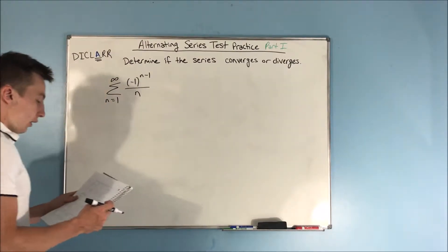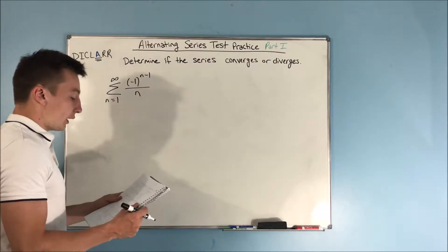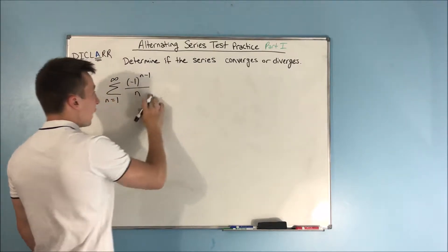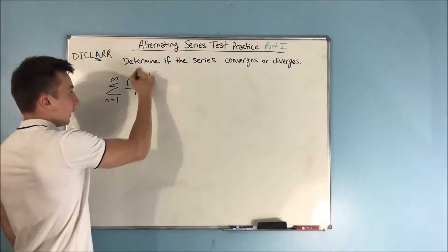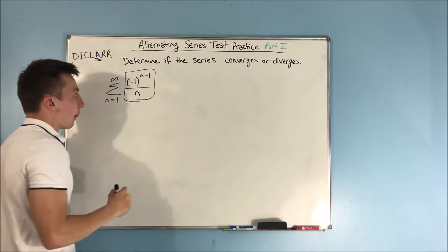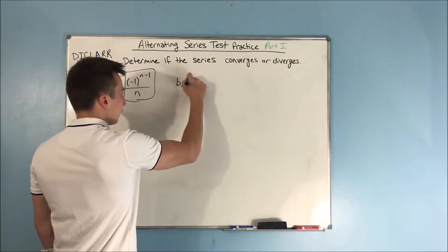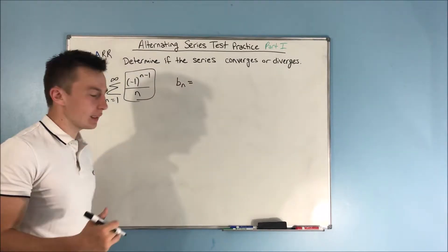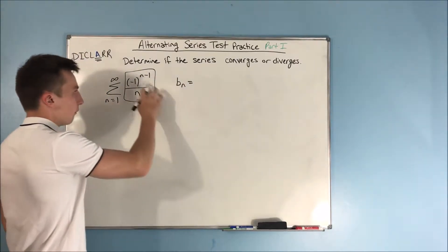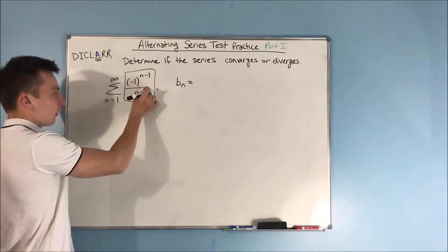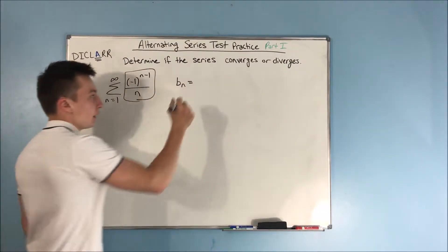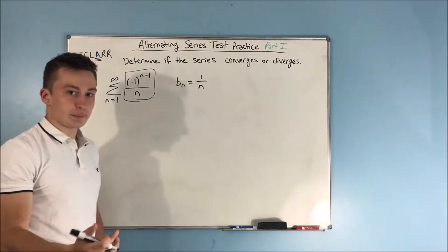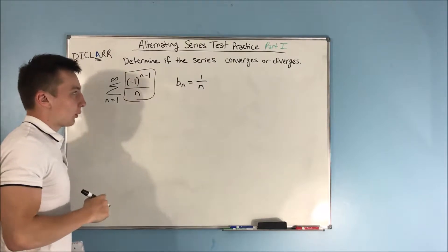To use the alternating series test, we need to first figure out what our B sub n actually is. We know that A sub n is all of this, but B sub n — which is what we're using in the alternating series test — is not going to be all of this. It's going to be just the one over n. It's not going to include what is making this an alternating series, and that's the negative one to the n minus one.